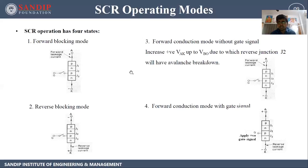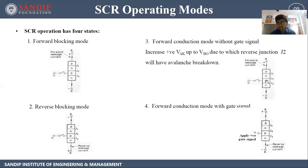Third is forward conduction mode without gate signal. We again apply forward voltage between anode and cathode, so J1 and J3 are forward biased and J2 is reverse biased. J2 has a barrier of width W, where W is inversely proportional to the applied voltage VAK. As we increase VAK, W reduces. Once VAK becomes greater than VBO — the forward break over voltage — the barrier vanishes and carriers can move across J2. Now all three junctions allow current flow.